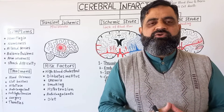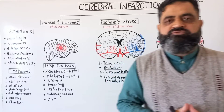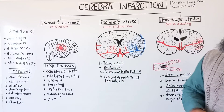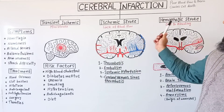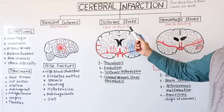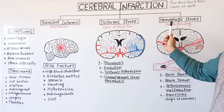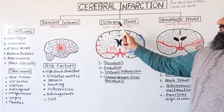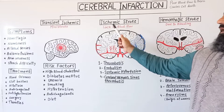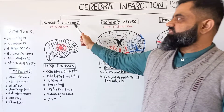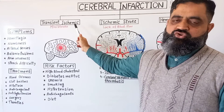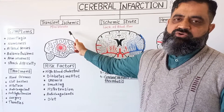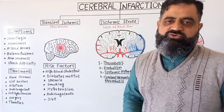We are going to discuss the different types of stroke. There are three major types: number one, hemorrhagic stroke; number two, ischemic stroke; and number three, transient ischemic stroke, which is also known as mini stroke.